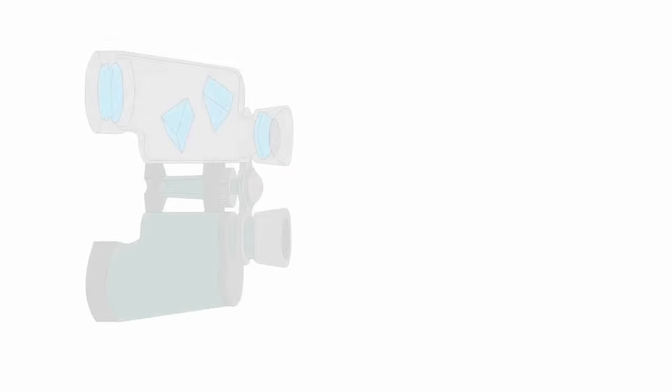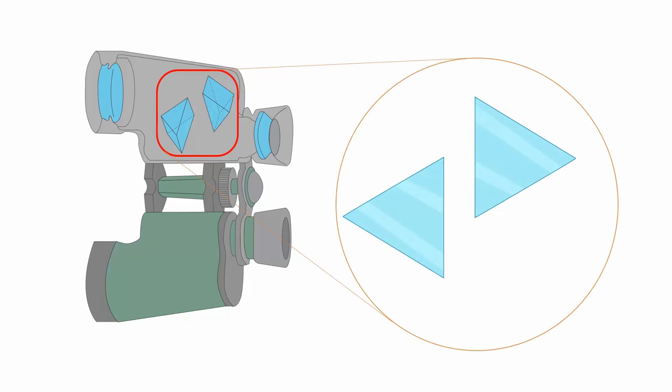Total internal reflection also occurs in binoculars. A binocular uses two prisms on each side. The critical angle of a prism is around 42 degrees. When light enters a right-angled prism, it creates an angle greater than the critical angle causing total internal reflection.